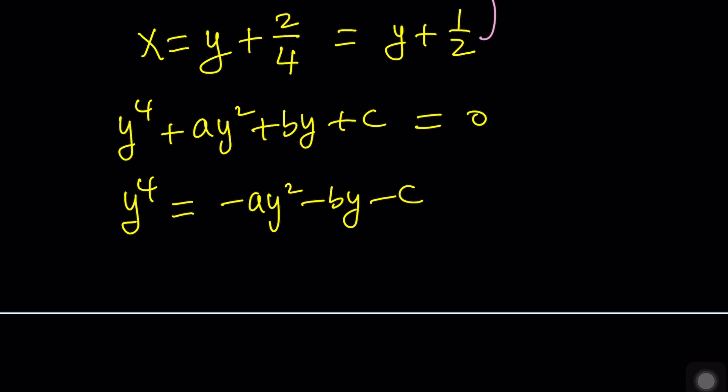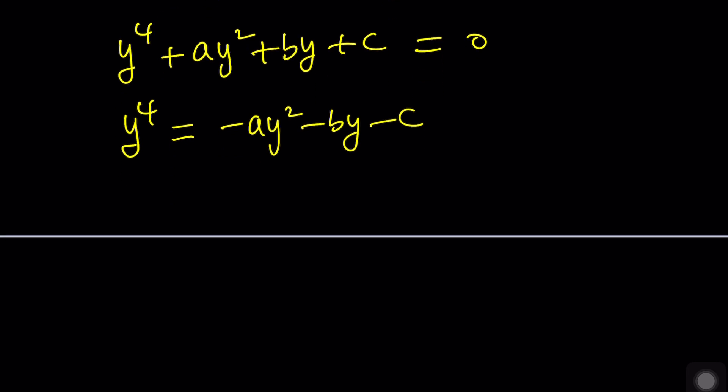the method for solving one of the methods for solving quartic equations. So, we want to add something to both sides to make the left-hand side a perfect square. So, we can add something like this. y to the fourth plus 2k y squared plus k squared. We'll make this a perfect square,